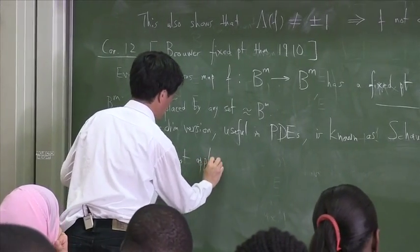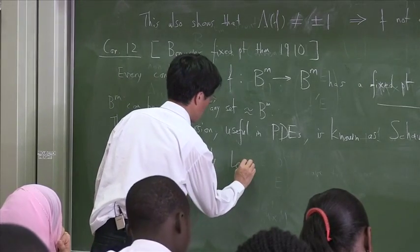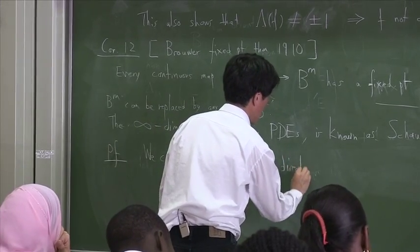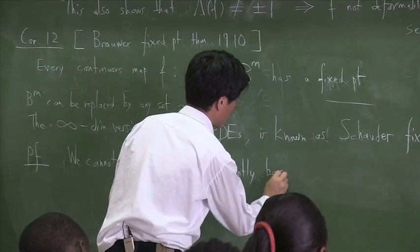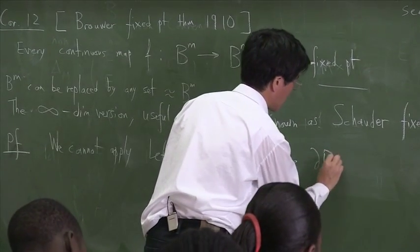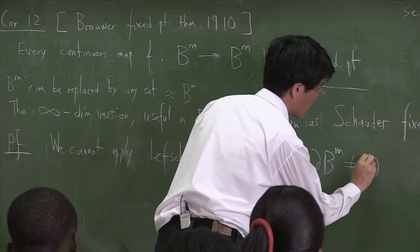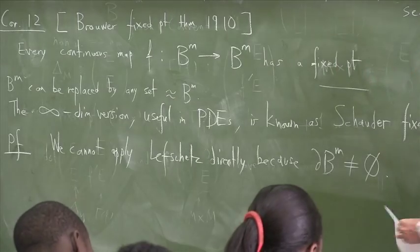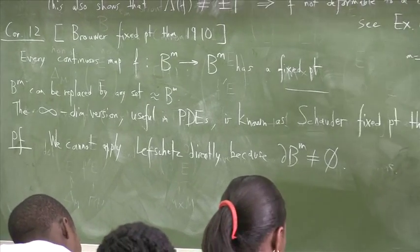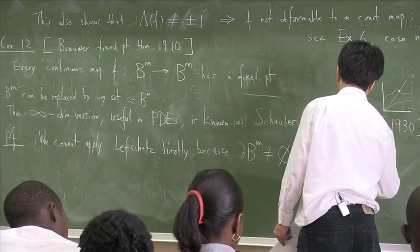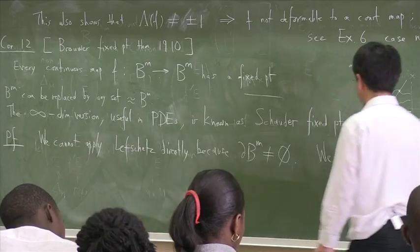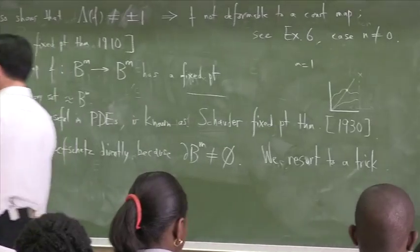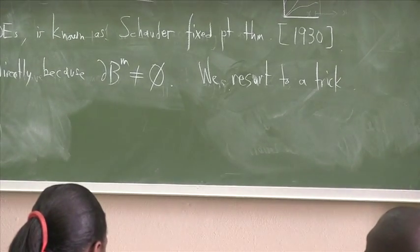Oriented closed manifolds. You cannot have boundaries, but this ball has a boundary. Boundary is bad for intersection theory because as you deform the picture, the intersection might drop off the boundary, fall out of the boundary. So we have to somehow modify the problem, deform the problem, in order to reduce it to a case when there is no boundary. We cannot apply Lefschetz directly because unfortunately the boundary is present. The boundary is not empty, so B is not closed. So we have to resort to a trick in order to translate this problem into a problem without boundary. Here's a trick, so please be patient with us.